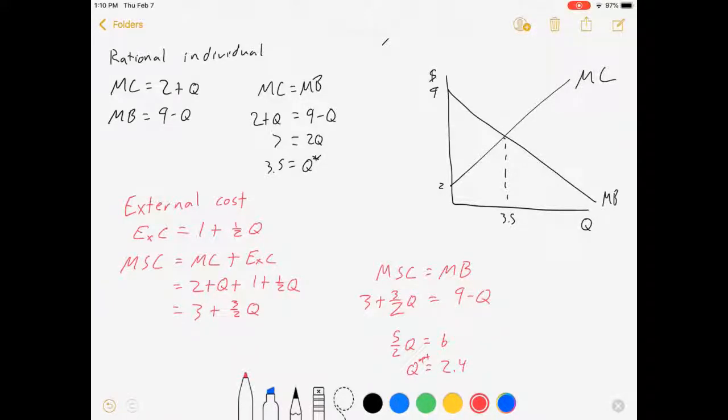So what we're going to find is if we draw a marginal social cost, it might, in this case, look something like this. Marginal social cost, where it accounts for the external cost in between.